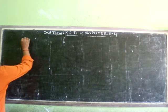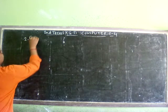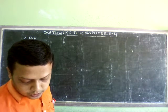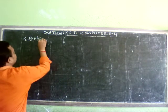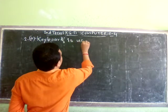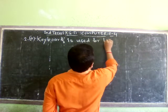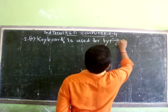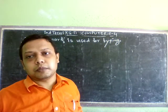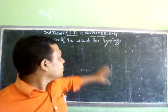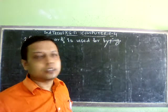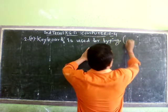Question number 2A: Keyboard is used for typing. Keyboard has many buttons like alphabet keys, number keys, and etc. Those buttons help us to type or write something on our computer. So keyboard is used for typing — it is true.